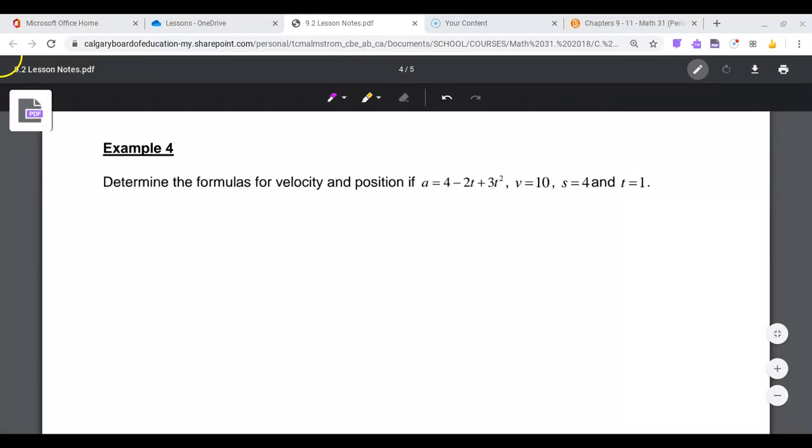Example 4. Determine the formulas for velocity and position if a equals 4 minus 2t plus 3t squared, and we know that v equals 10, s equals 4, and t equals 1, or when t equals 1.